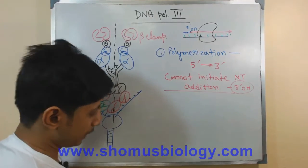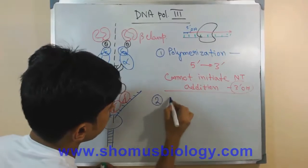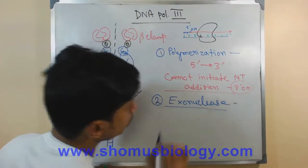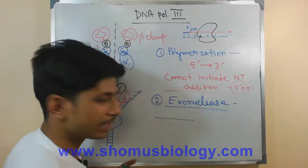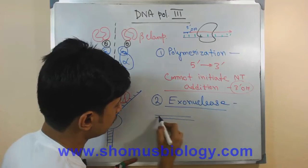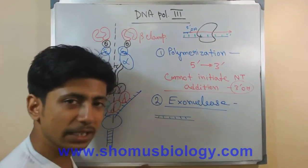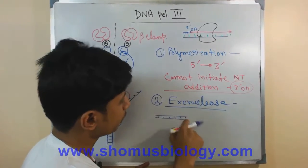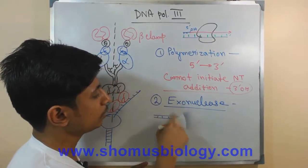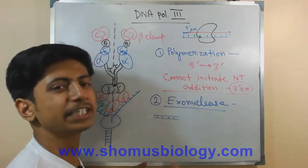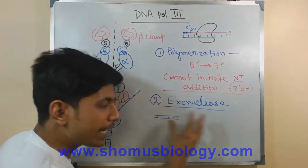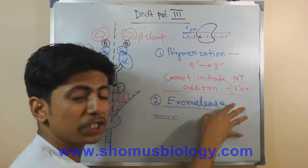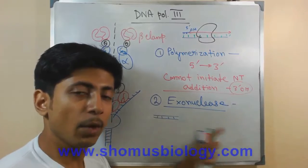Besides polymerization, DNA Polymerase 3 also has an exonuclease functionality. Exonuclease means it can cleave DNA from the terminal end — this is the exonuclease activity. It can degrade the nucleotide sequence there. So this enzyme has a constructive feature — polymerization — and a destructive feature — exonuclease activity.